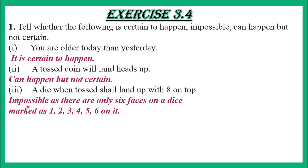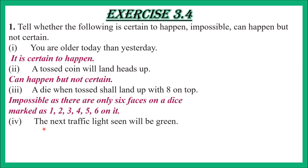As there are only 6 faces on a die, marked as 1, 2, 3, 4, 5, and 6. Part 4: the next traffic light seen will be green. This can happen but is not certain. Solution: it can happen but not certain, because the light could also be red.